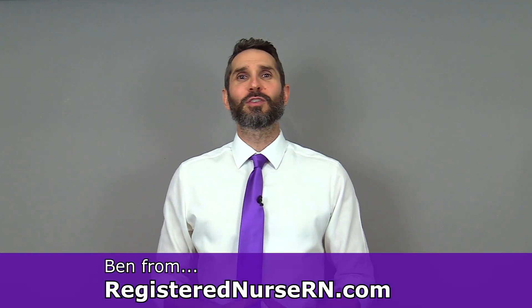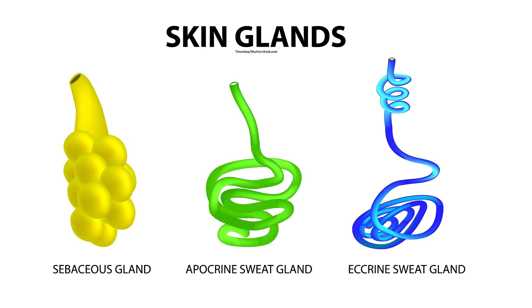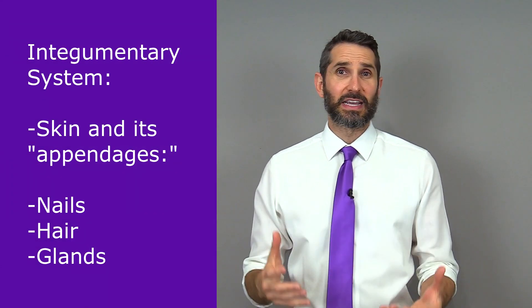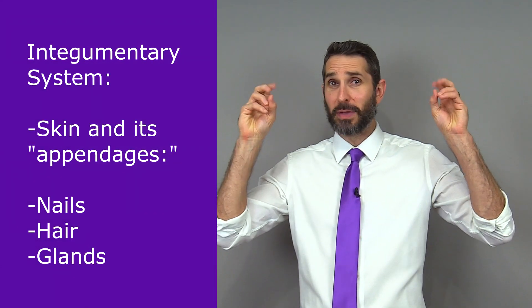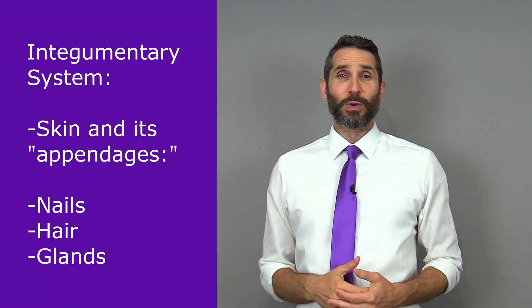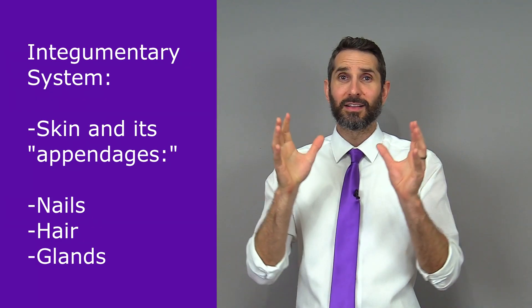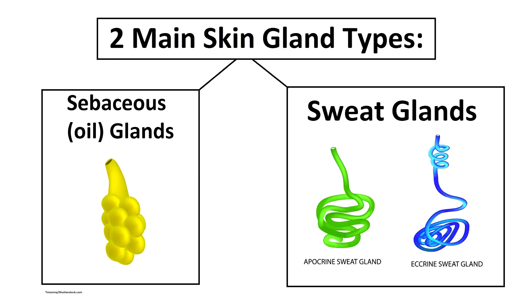What's up everyone? In this video we're going to talk about the glands of the skin. There are two main types of glands found in the skin: sweat glands and sebaceous oil glands.